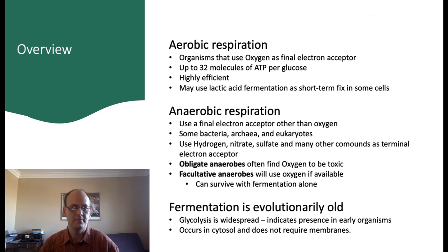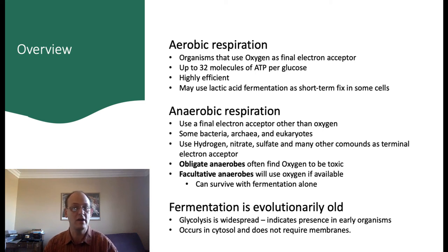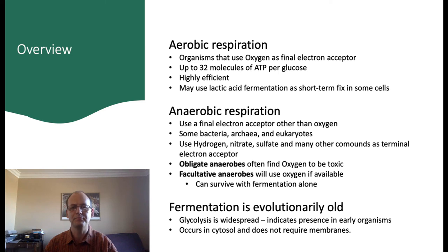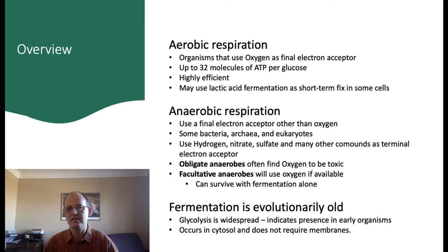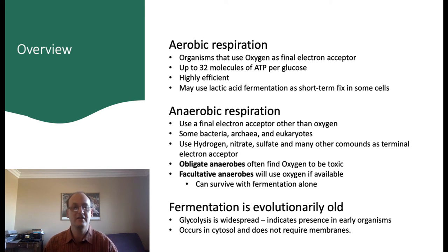Let's look at how these different systems of obtaining energy compare. The full glycolytic pathway is called aerobic respiration, because organisms that use this need to have oxygen available to serve as a final electron acceptor at the end of the electron transport chain. Aerobic respiration is very efficient, yielding a maximum of 32 molecules of ATP per molecule of glucose, although this is typically more around 29 molecules of ATP. Sometimes when oxygen isn't available for a short period of time, cells may use fermentation as a sort of short-term fix in order to have continued access to ATP, although this is very inefficient. However, inefficient is certainly better than dead.